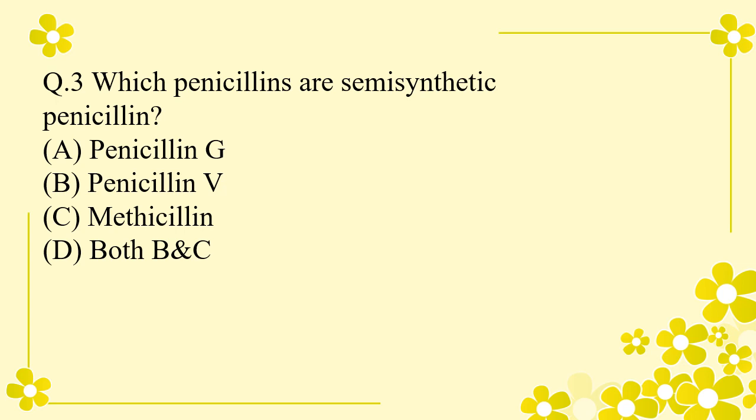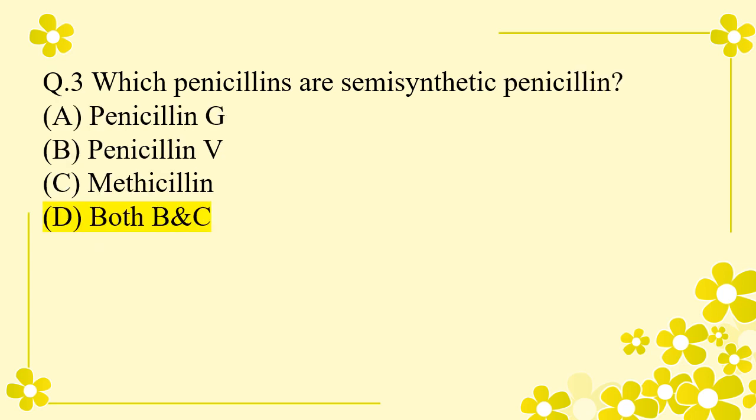Question 3: Which penicillins are semisynthetic penicillin? Option A: penicillin G. Option B: penicillin V. Option C: methicillin. Option D: both B and C. The right answer is option D — both B and C. That means penicillin V and methicillin are examples of semisynthetic penicillins.